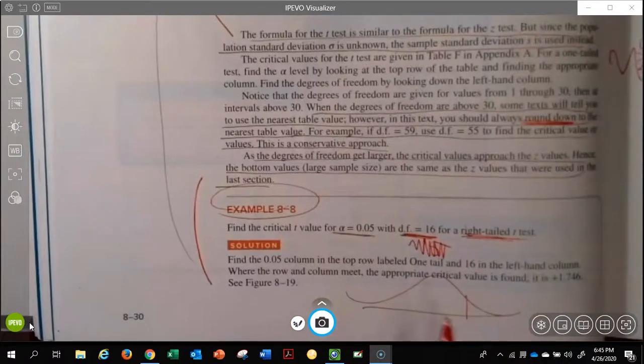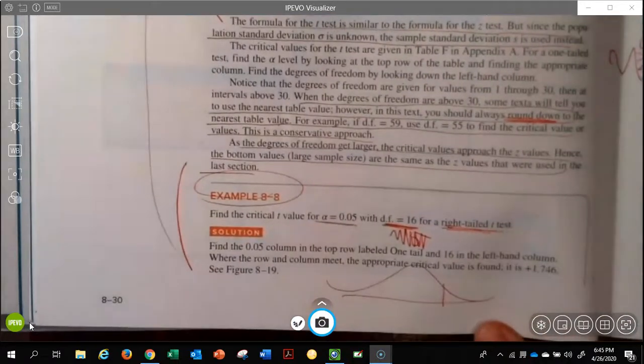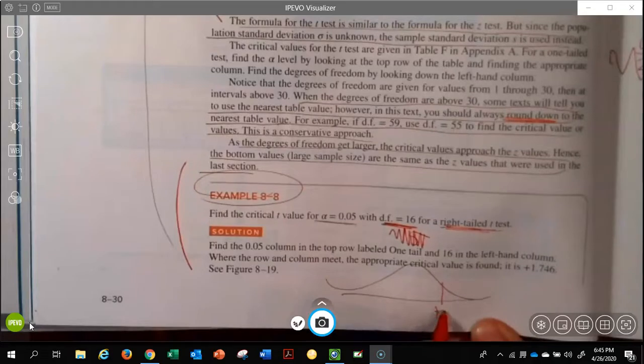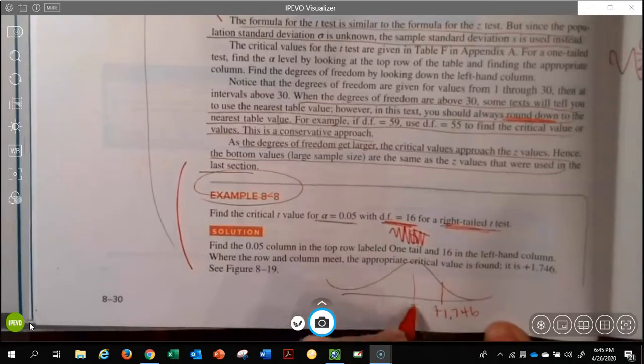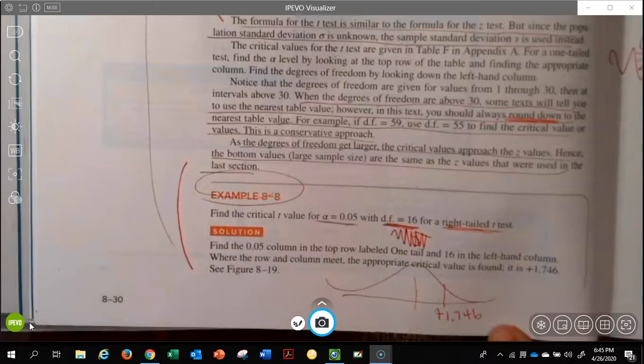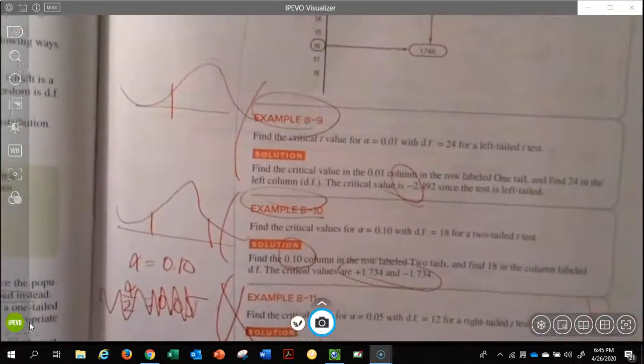The big question is going to be, is it a positive or is it a negative? And that's where you've got to remember. If we're on this side of the mean, it's going to be positive. And you've got to assign that value. So I want you to look with me at 8.9.